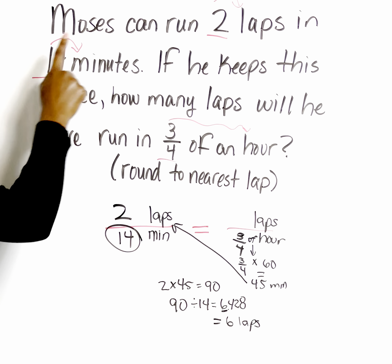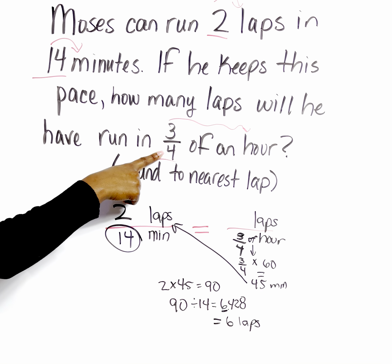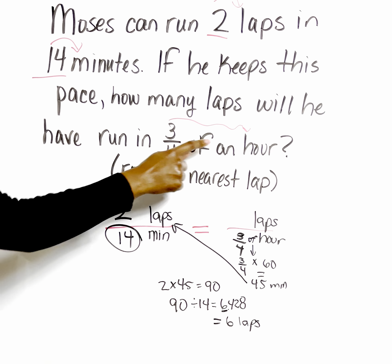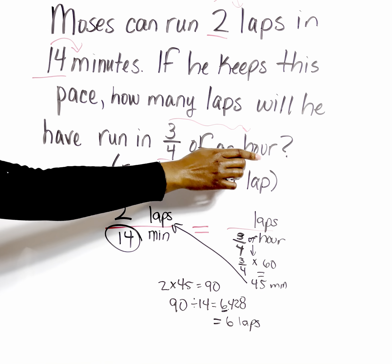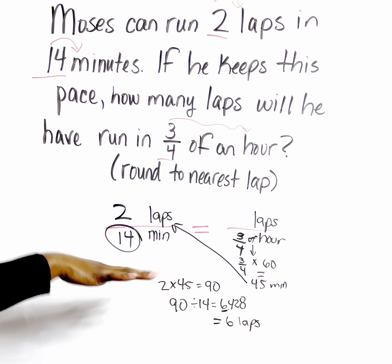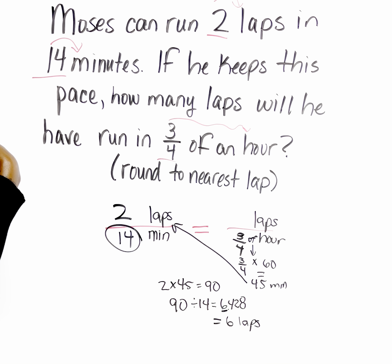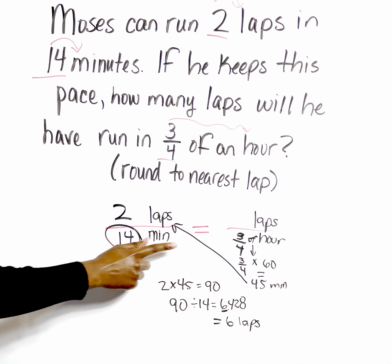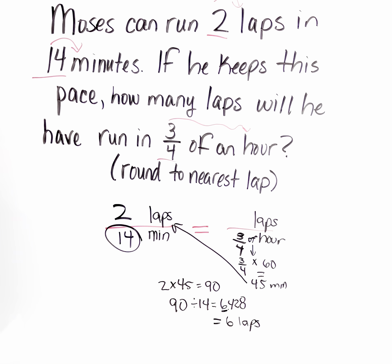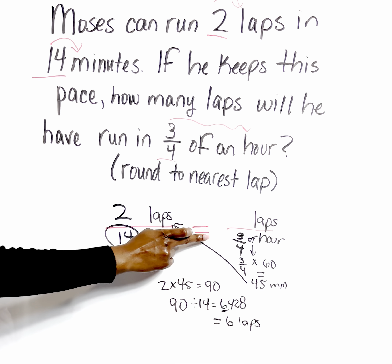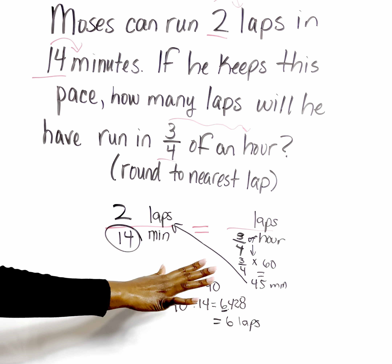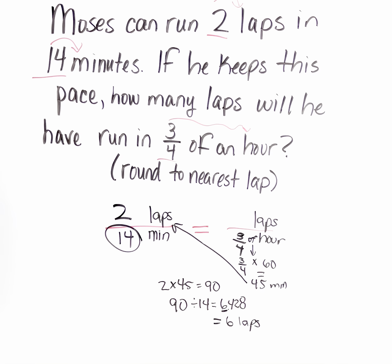Let's identify our values. We're given two, 14, and three-fourths. What are they describing? What are our units? Two is describing laps, 14 is describing minutes, and three-fourths is describing hours. Because I have that discrepancy — three different units — that means I'm going to do some type of conversion. I know minutes and hours both represent time, so that's how I knew to put both of those on the bottom and laps up top. We fill in our units — the equal sign reminds you that units have to match across.